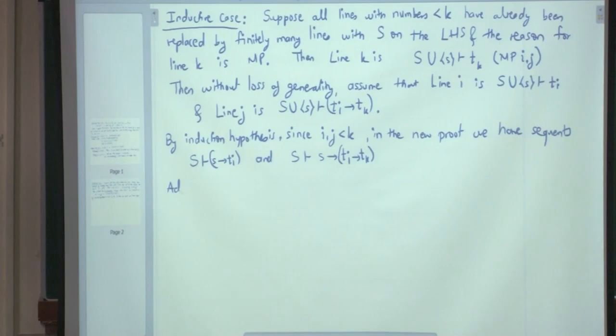So, add lines. So, S proves that S implies T_I implies T_K implies S implies T_I implies S implies T_K and what is the reason for this line? LA2 and don't forget monotonicity.